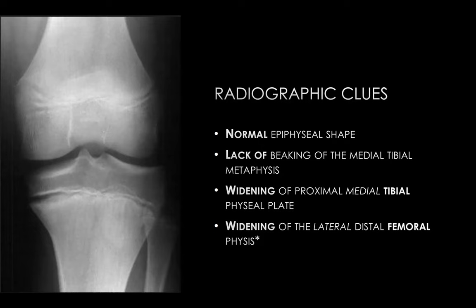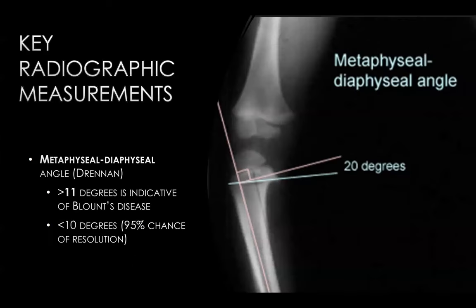Widening of the lateral distal femoral physis is somewhat unique to the adolescent subtype, related to the distal femoral varus deformity. The metaphyseal-diaphyseal angle — measured between the transverse axis of the tibial metaphysis and the perpendicular line just above it — if greater than 11 degrees, is more indicative of Blount disease versus a physiologic process. For adolescent Blount disease, the tibial-femoral angle on a normalized standing radiograph is more commonly used.